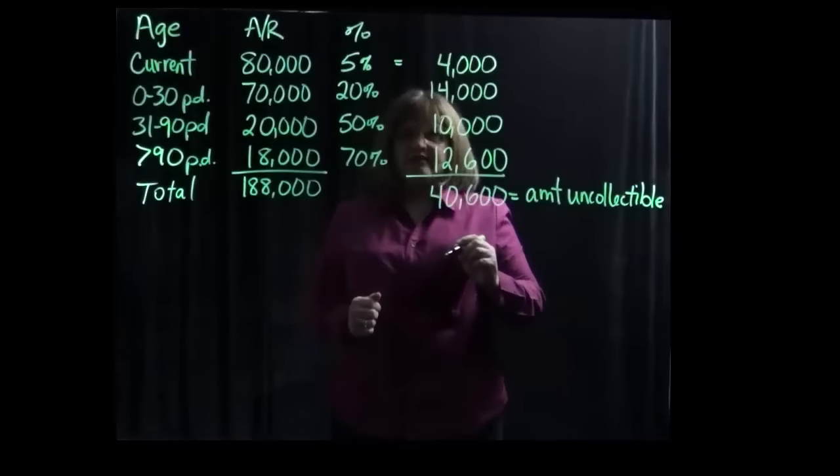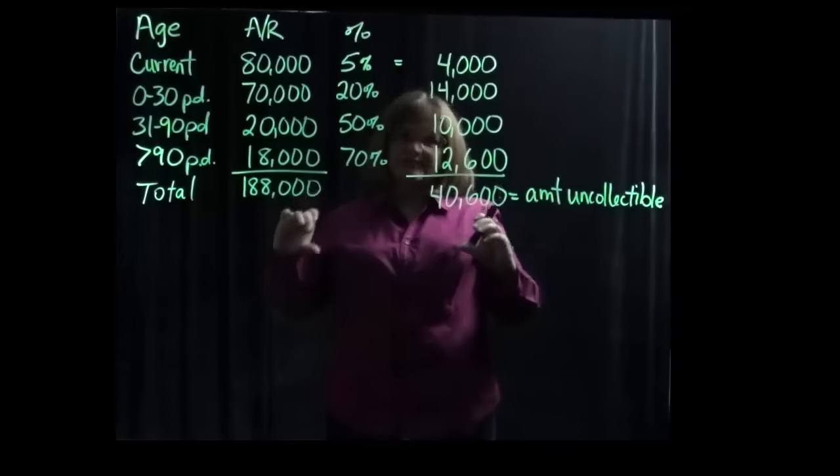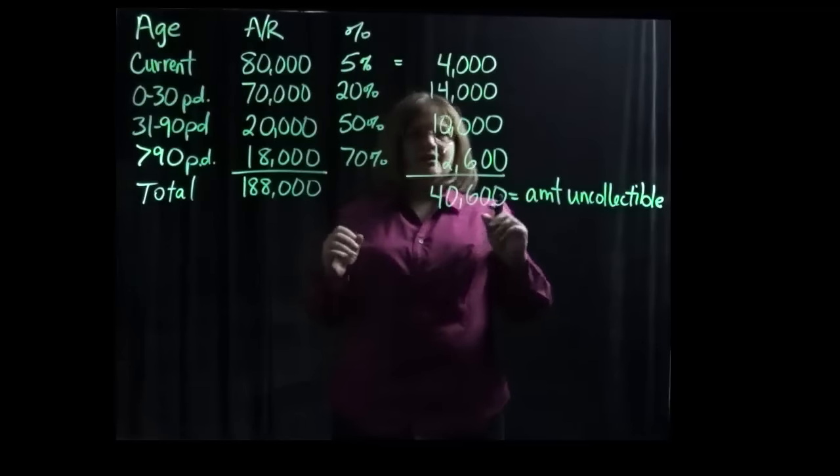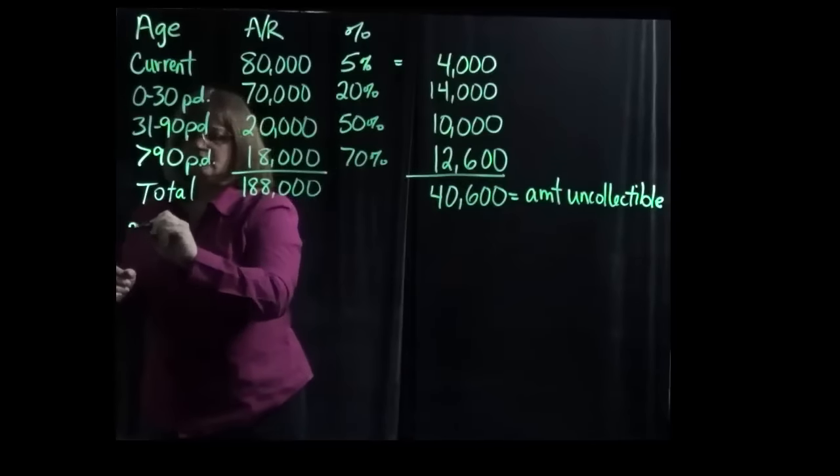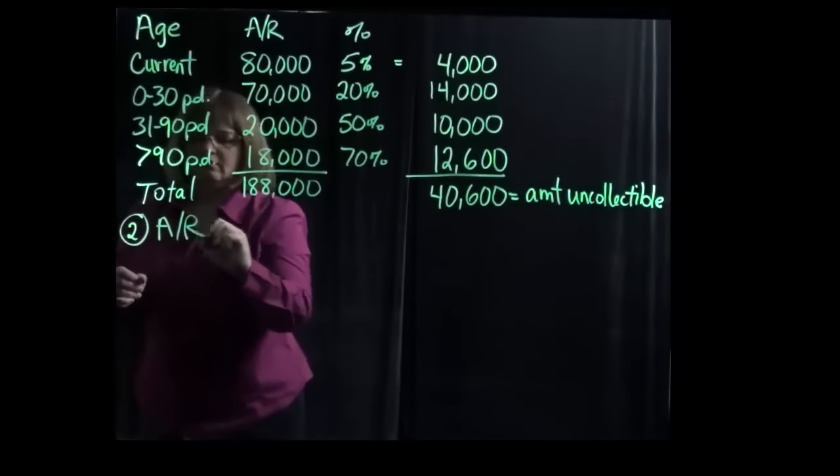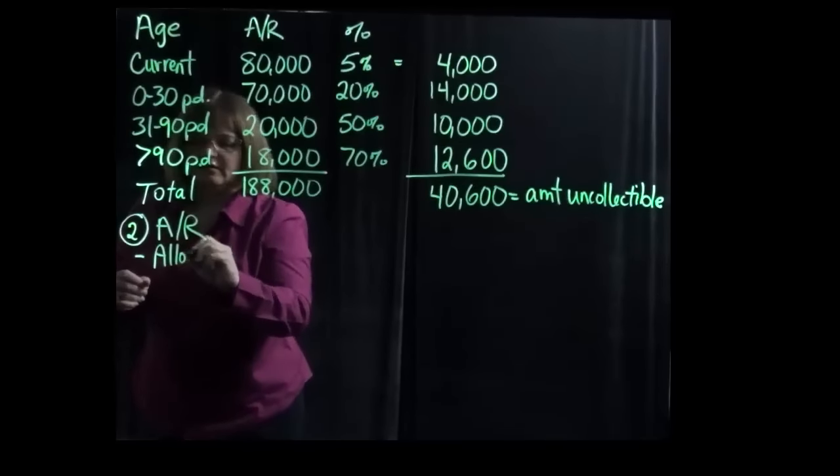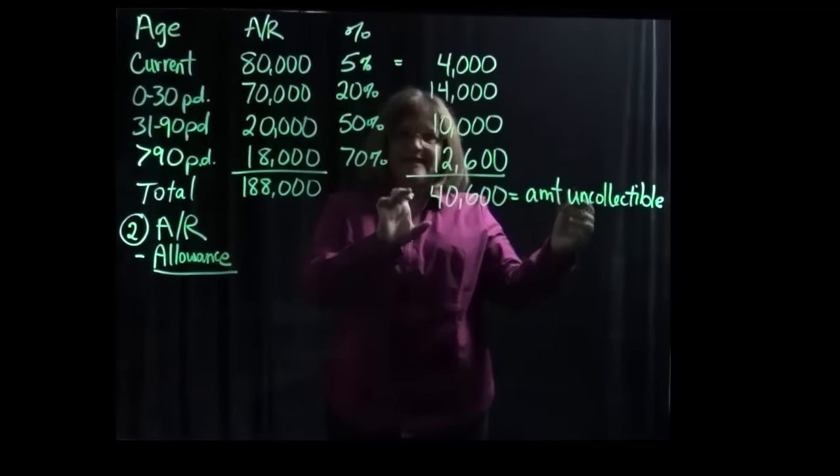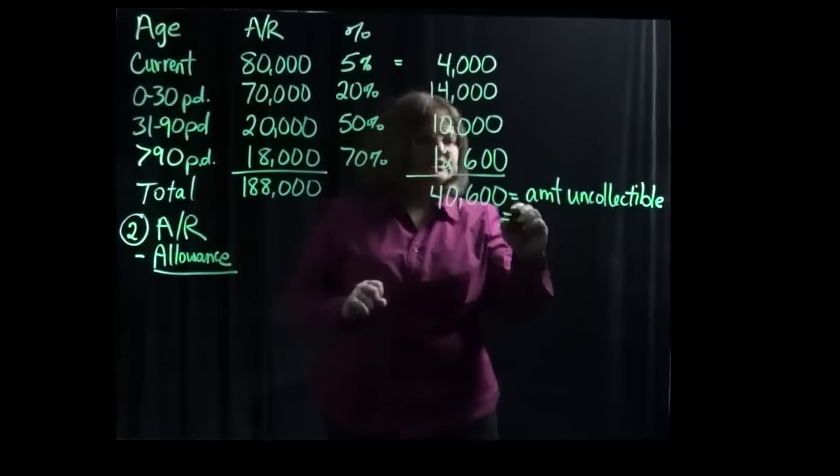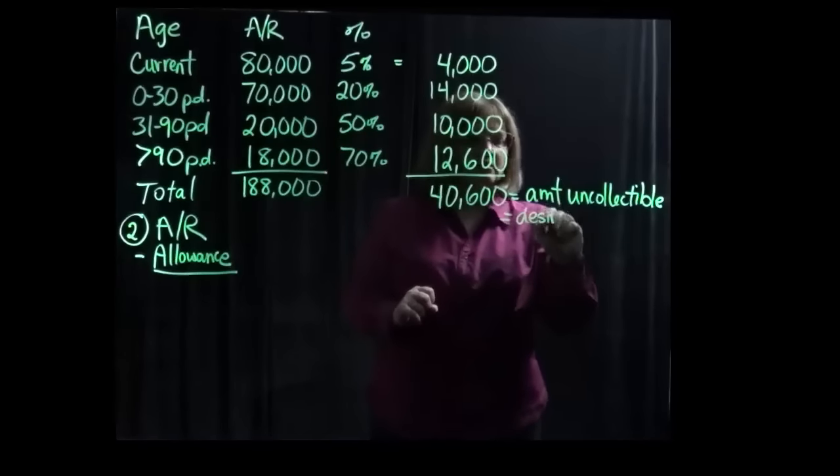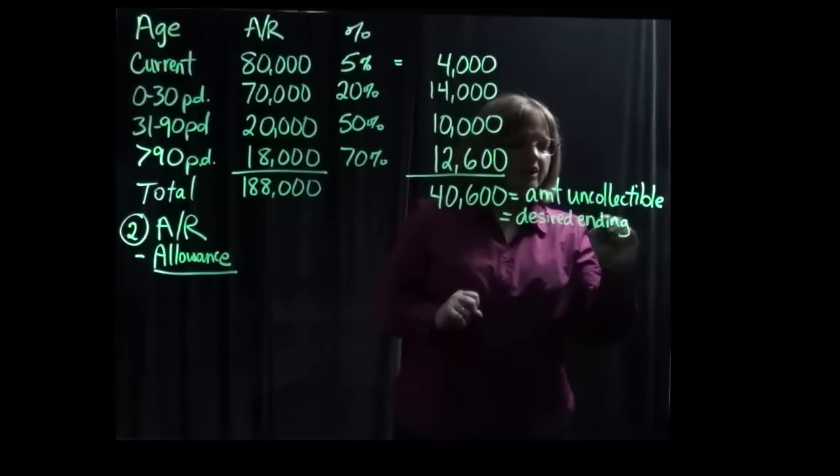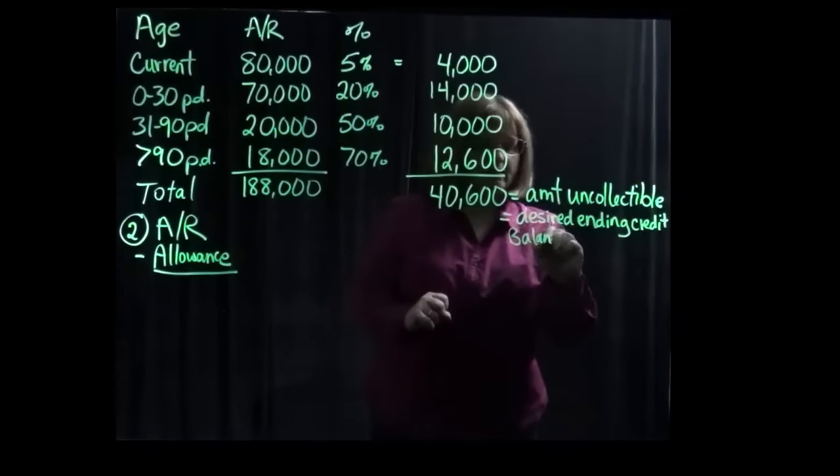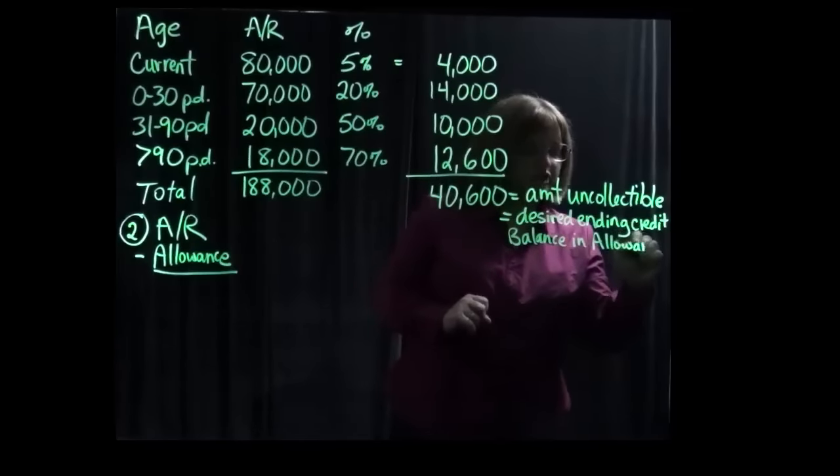Part two of this question asks us to calculate the net realizable value, or the net receivable balance that you would be reporting on the balance sheet. And to get that amount, we take the accounts receivable account and we subtract the allowance from that. Now I should point out that this amount that we calculated that is uncollectible, that's the amount that we want to be our ending credit balance in the allowance account, the allowance for doubtful accounts.